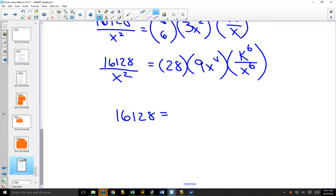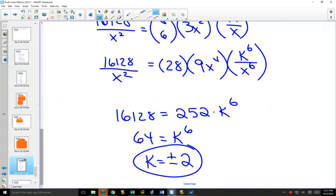And 28 times 9 is 252. 252 times k to the power of 6. So we take our 16,128, divide it by 252, we get 64. 64 is equal to k to the 6. You have to take the 6th root of both sides, which means that k could equal either plus or minus 2.